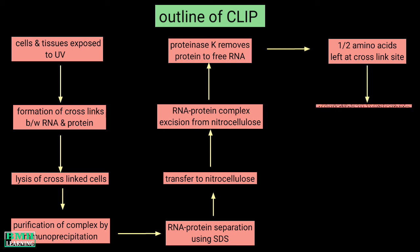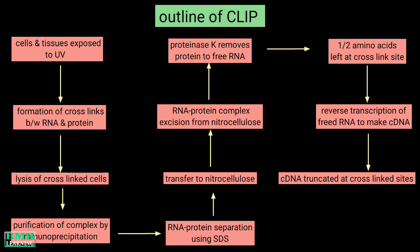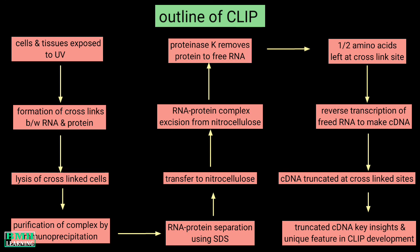After this, the freed RNA is then reverse transcribed, which results in the formation of cDNAs. These cDNAs are often truncated at the cross-linked site. The truncated cDNAs are the key insight and unique feature in the development of CLIP, because this feature allows identification of the RNA-protein interaction site at high resolution.